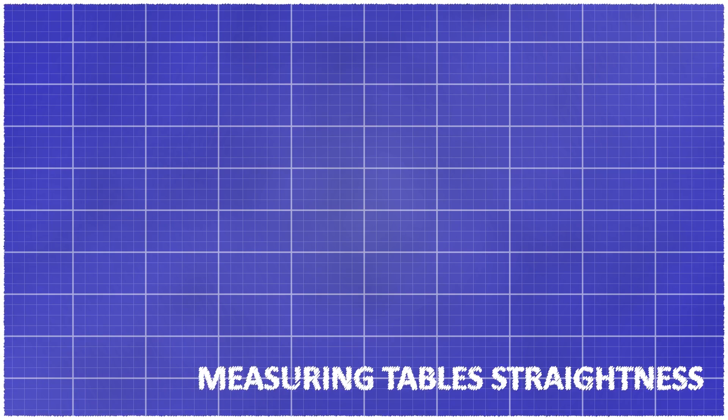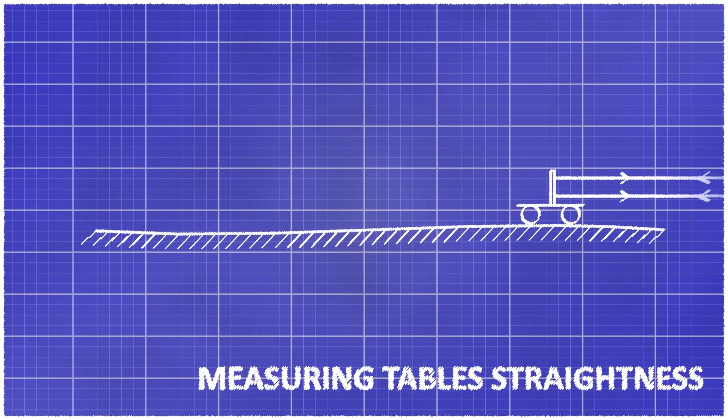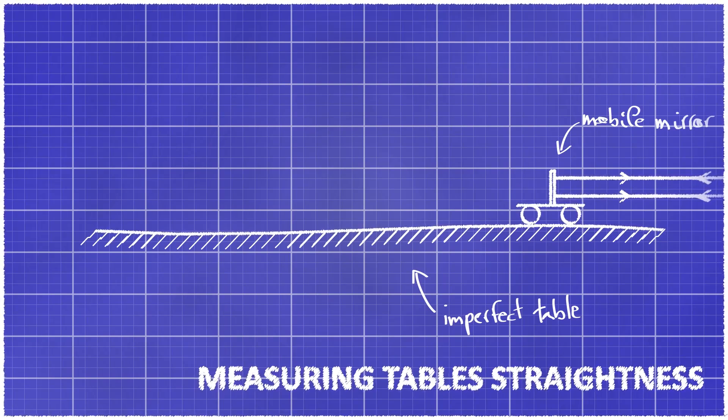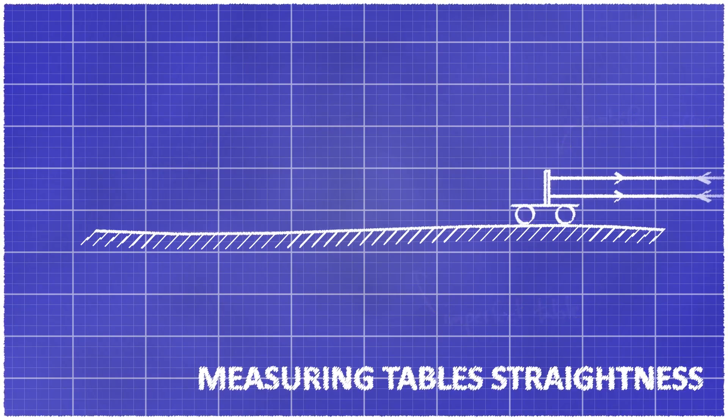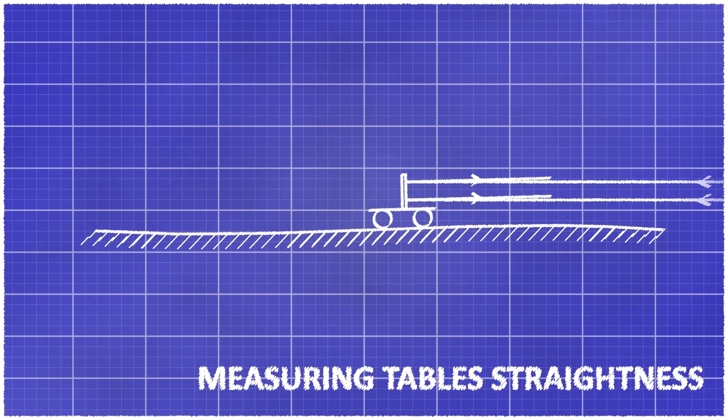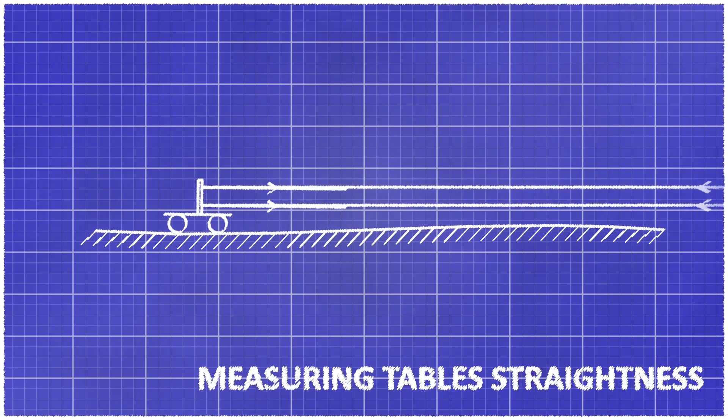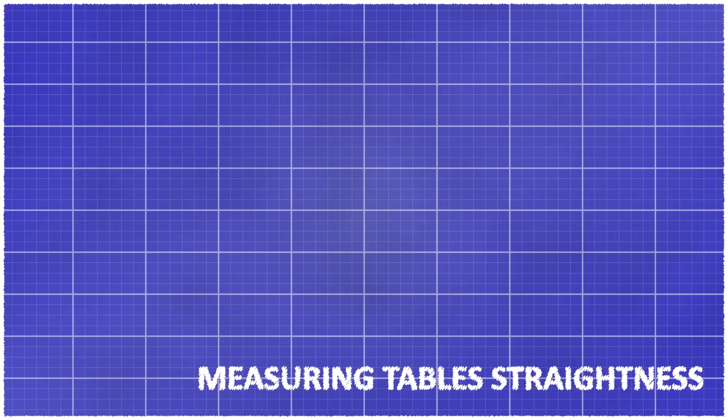Finally, auto-collimeters can be used to measure the straightness of tables or the wobble of translation stages. Imagine you have an imperfect table and a mobile mirror moving on it. As you move the mirror on the table, it will be tilted due to the local slopes. This will change the angle of the light reflected to the auto-collimator. Again, this angle change will be represented by a shift of the reticle on the camera. Typical angular sensitivities of auto-collimeters are on the order of one thousandth of a degree.